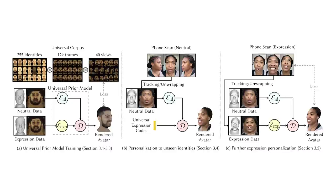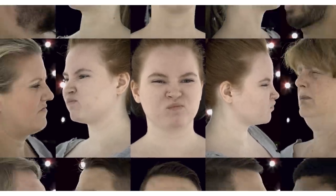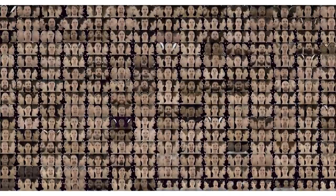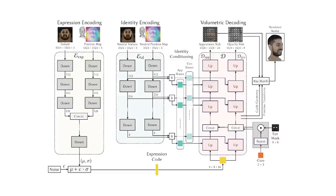Our method produces a person-specific volumetric decoder using a universal prior model that is trained on high-quality multi-view data. We use a multi-view capture system to capture high-quality video of facial performances. We captured 255 identities of different ages, genders, and races to build our dataset. Our universal prior model is a form of hyper-network that takes conditioning data specific to an individual and produces parameters of a person-specific avatar in the form of a neural network decoder.